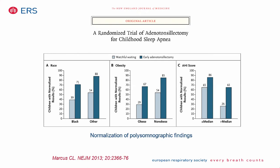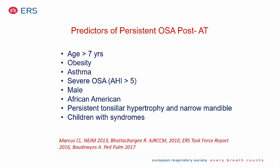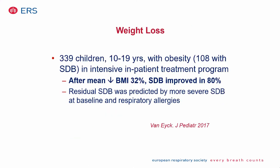Children who did not improve well after adenotonsillectomy were those who were obese, had less severe disease with lower OAHI, and those of African American descent. All studies show similar results: children who are older, obese, have asthma, more severe obstructive apnea, male sex, African American background, or have syndromes are less likely to improve after adenotonsillectomy.